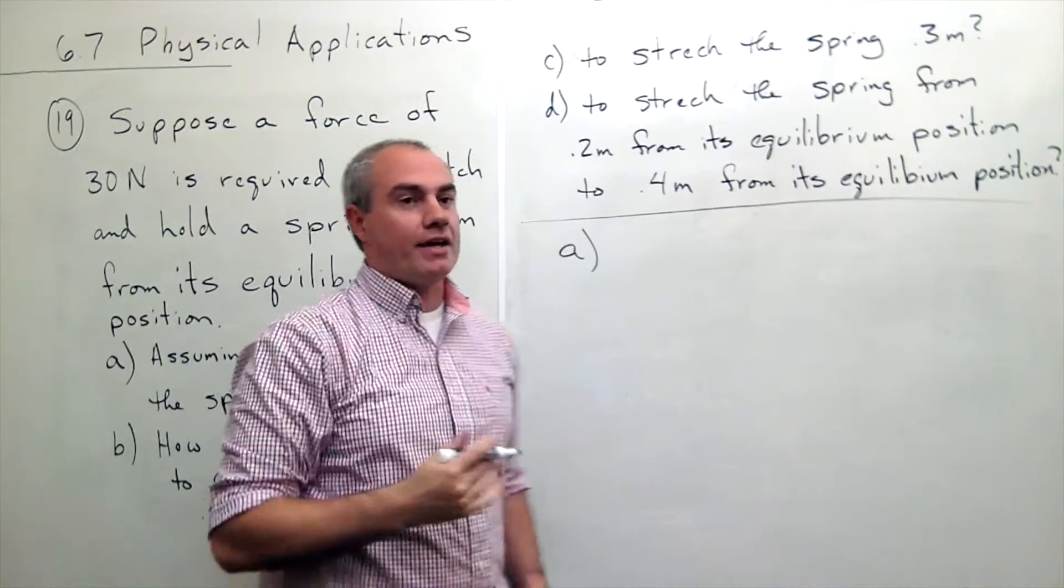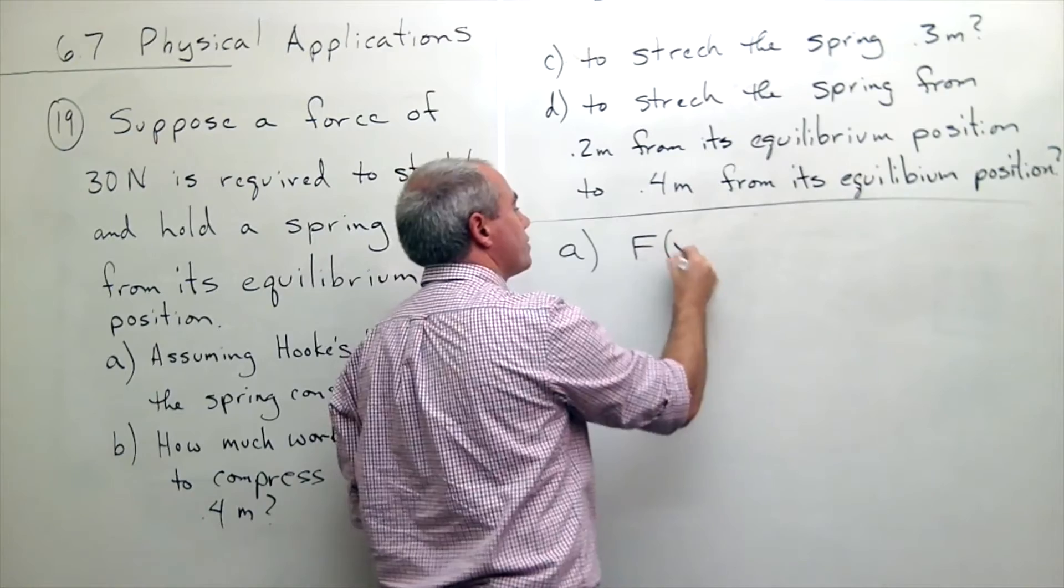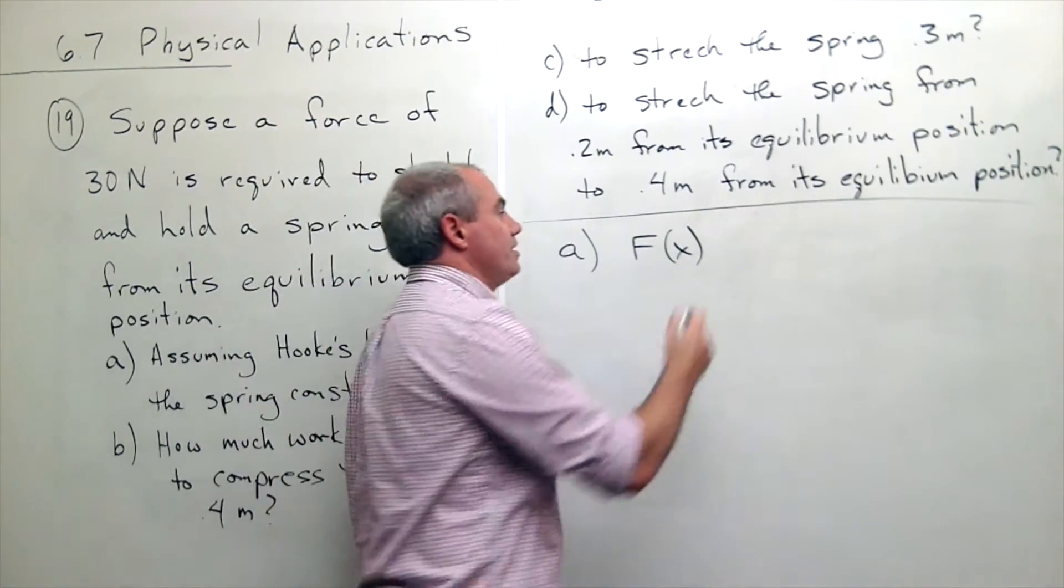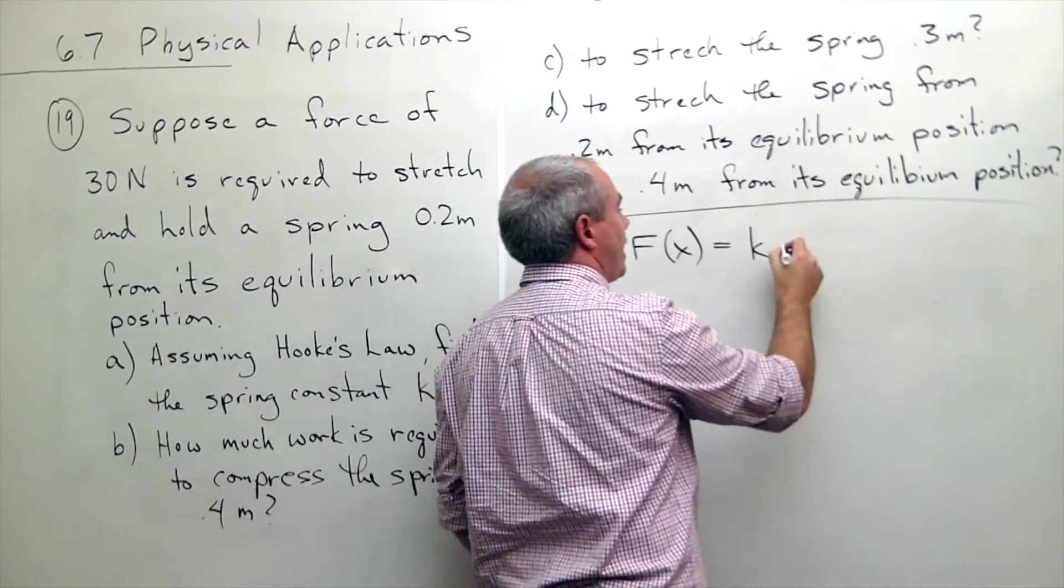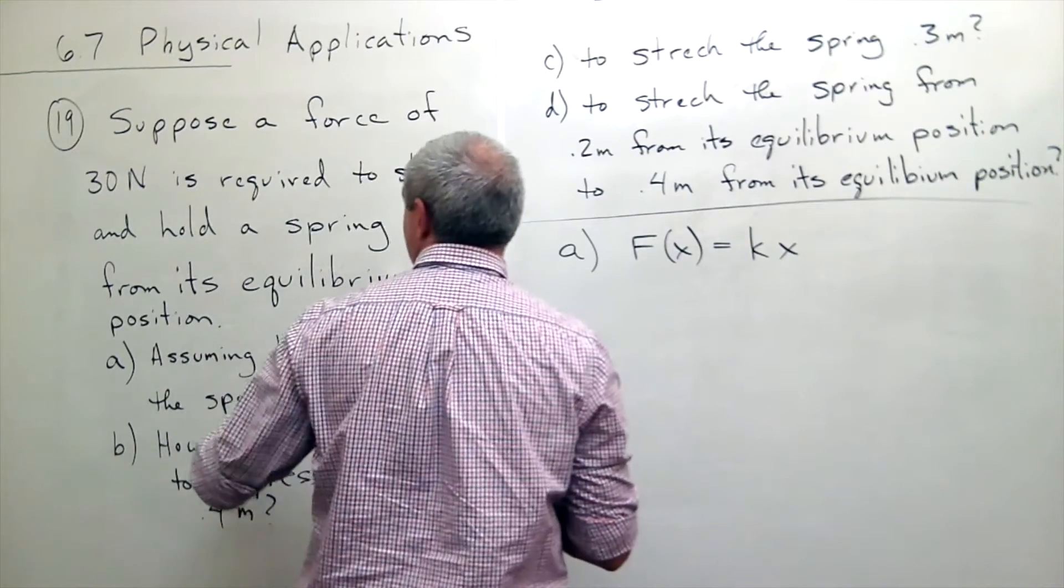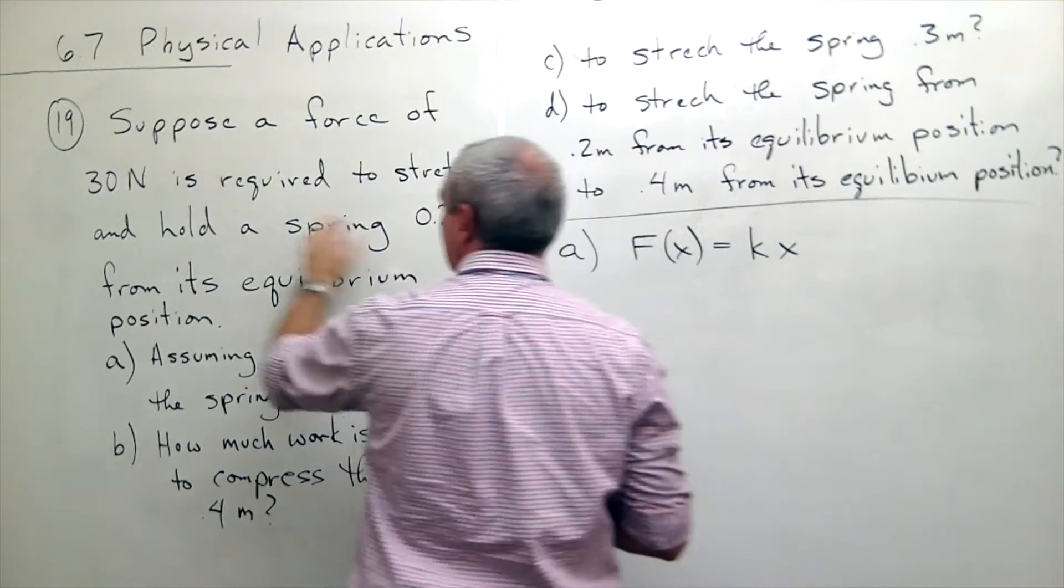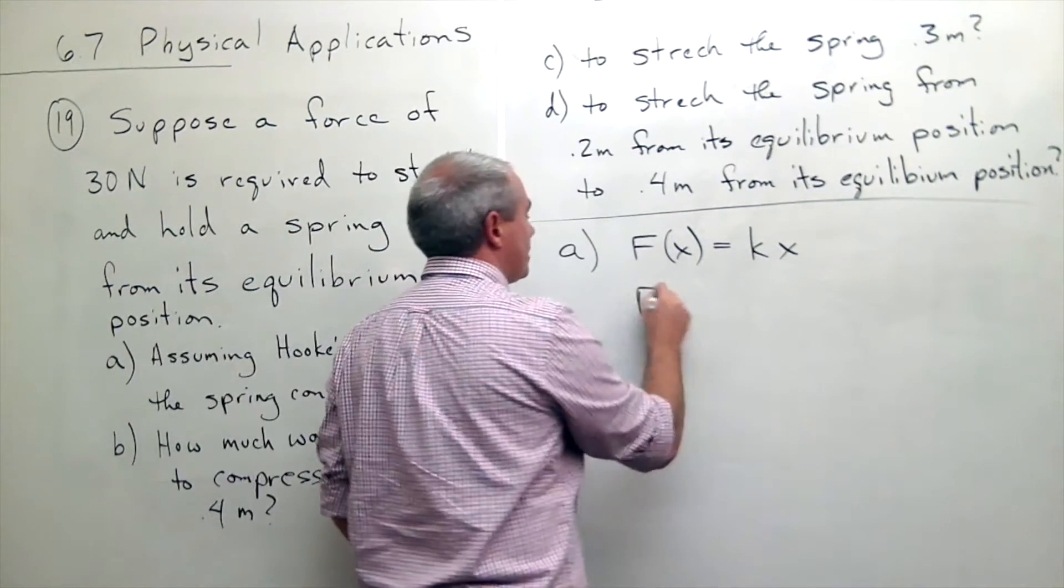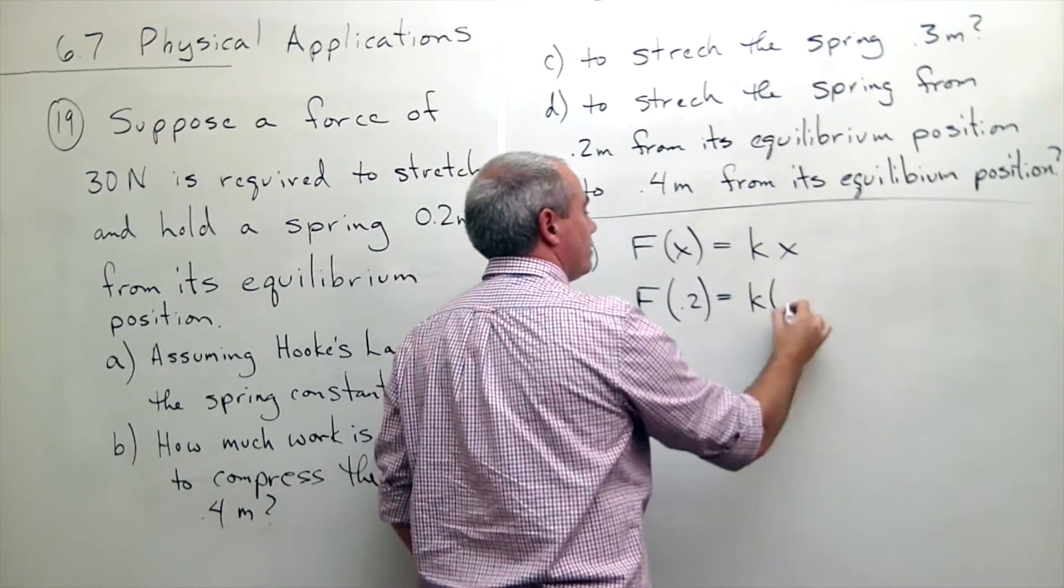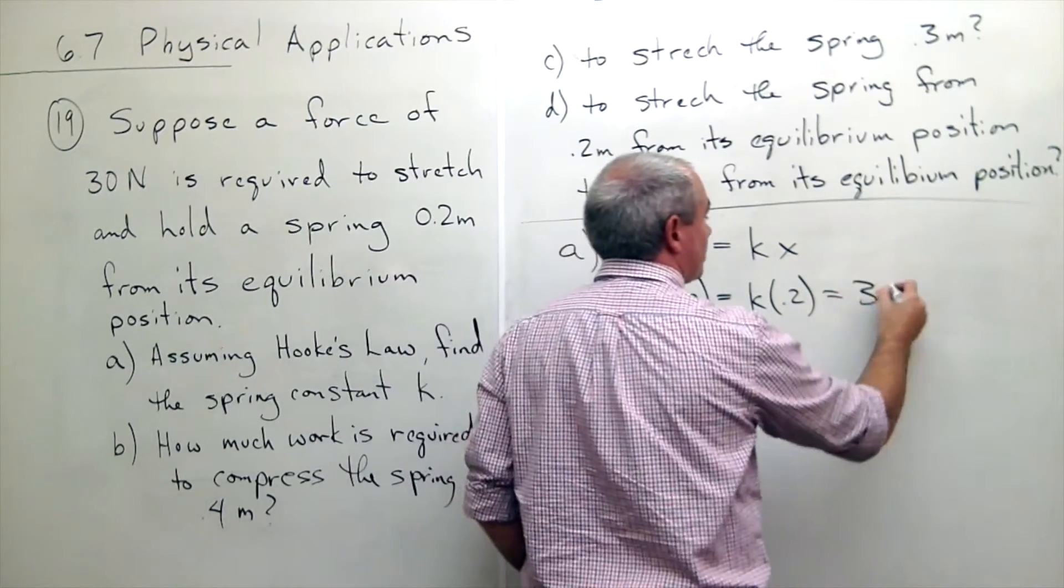So part A is just referring to Hooke's law that says that the force required to move something to X is equal to some constant K times X. And in this case we said that to stretch it to 0.2 takes 30 newtons, so that means that the force at 0.2 is equal to K times 0.2, which is equal to 30 newtons, which is 30.